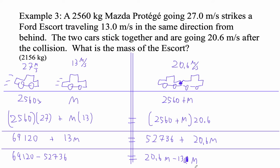Okay. So 20.6 minus 13 is approximately 7.6. So that equals 7.6M. And now we just have to do math. I'm going to go take this guy, subtract this guy. I've got 16,384 divided by 7.6. And I get that M is 2,155.789 kilograms.